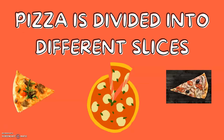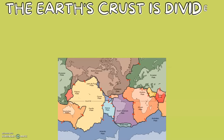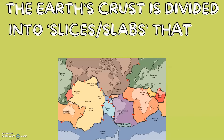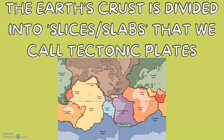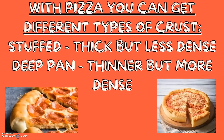Pizza is divided into different slices, and the Earth's crust is also divided into different slices that we call tectonic plates. With pizza, you can get different types of crust: stuffed crust, which is thick but less dense, or deep pan, which is slightly thinner but more dense.